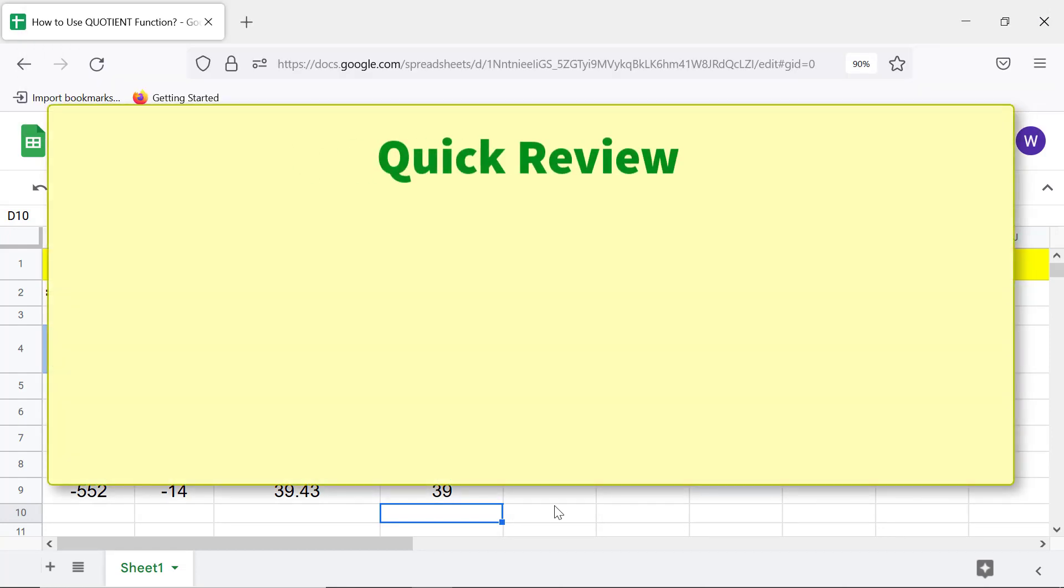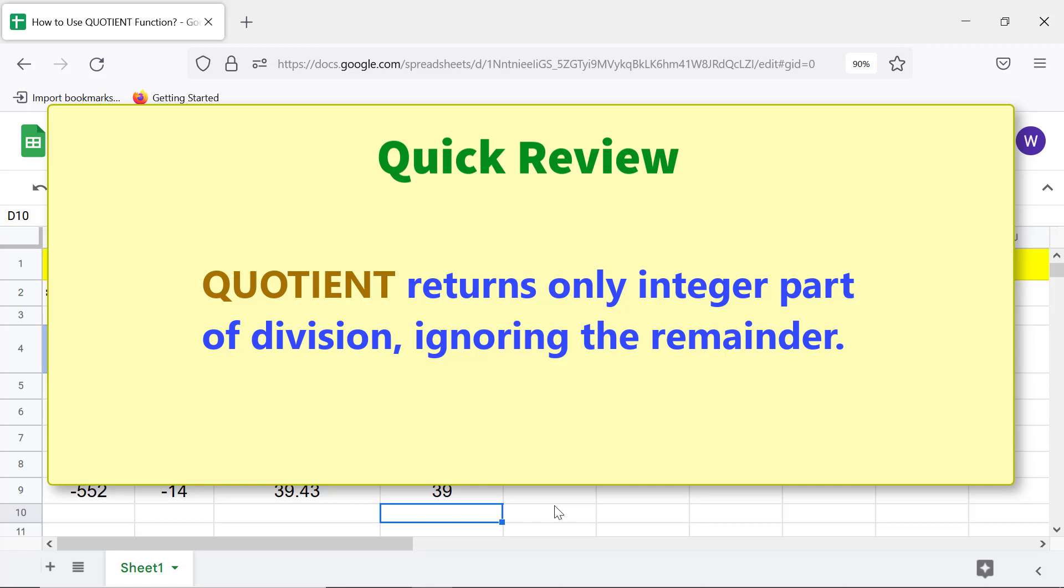Quick review. Quotient divides one number by another. Quotient returns only the integer part of division, ignoring the remainder.